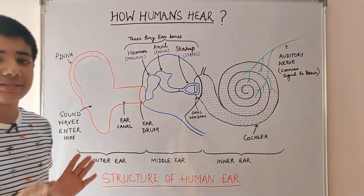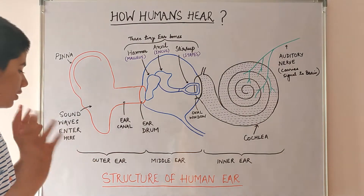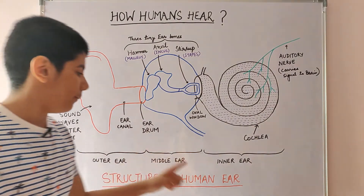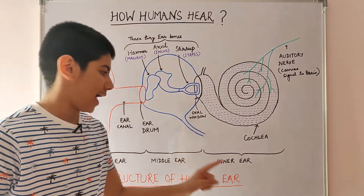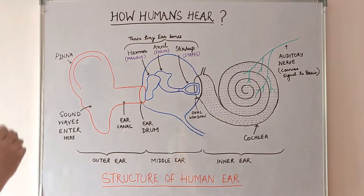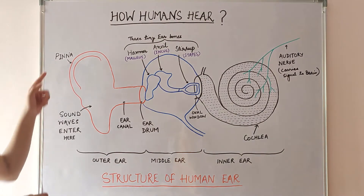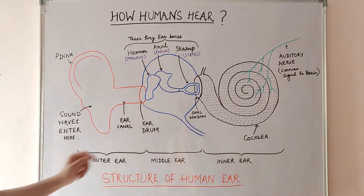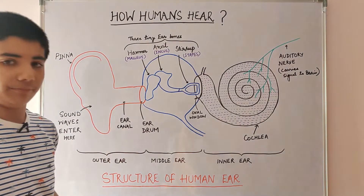The human ear is basically divided into three parts: outer ear, middle ear, and inner ear. The outer ear comprises the pinna, ear canal, and eardrum.